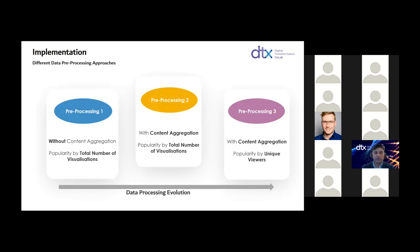For this implementation, we have created three different types of pre-processing. First, we do not do any content aggregations, so each episode is treated as a unique content, and we consider content popularity in terms of total number of visualizations globally. In the second pre-processing type, we do content aggregation so all episodes are clubbed into one content type, but still consider popularity by total visualizations globally. In the third method, we do content aggregation and consider popularity by unique user views, so if one user watches an item three times, it is counted as just one visualization.